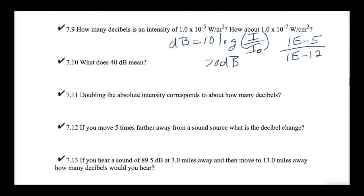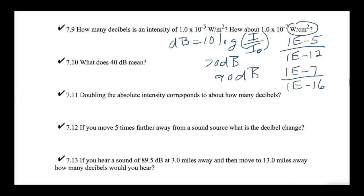The next part of 7.9 is 1×10⁻⁷ watts per centimeter squared. Since we're in centimeter squared units, we divide by 1×10⁻¹⁶. That gives 1×10⁹ — because −7 minus −16 is 9. The log of 1×10⁹ is 9, times 10 is 90 decibels. So those are the two answers for 7.9.